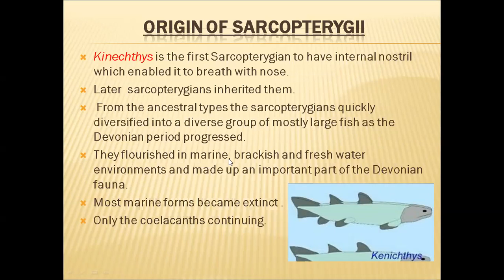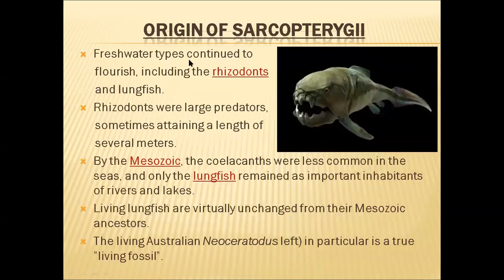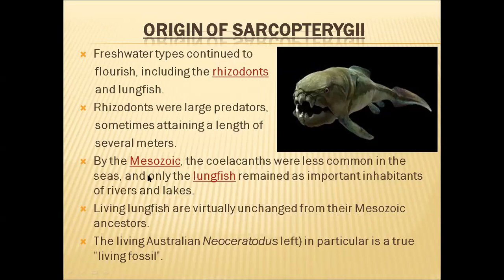Sarcopterygii flourished in marine, brackish, and freshwater environments and were an important part of Devonian fauna. Most marine forms became extinct. Only Coelacanths are living in seawater and Dipnoi fishes in fresh waters. In some freshwaters during that time, they continued to flourish including the Rhizodontida and lungfishes. In this picture, we see Rhizodus — a reconstruction of a fossil. These Rhizodus fishes were very large predators that sometimes grew up to several meters in length. By the Mesozoic era, Coelacanths were less common in the seas and only lungfishes remained as important inhabitants of rivers and lakes.